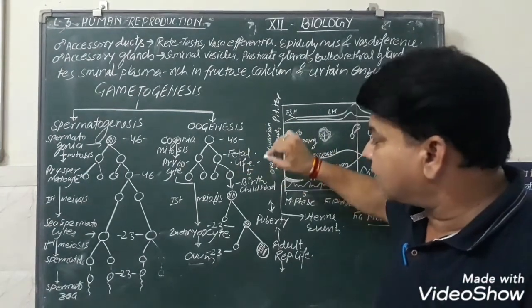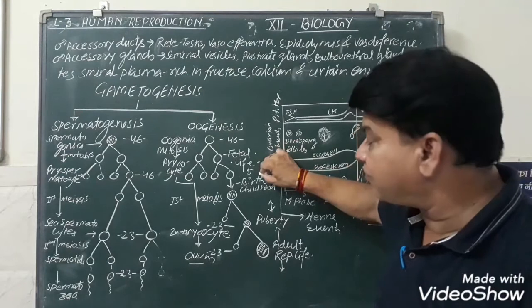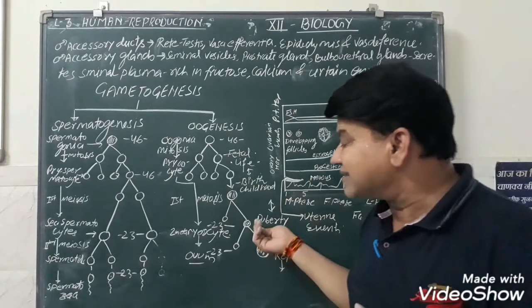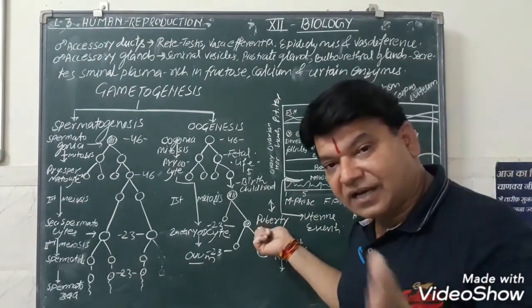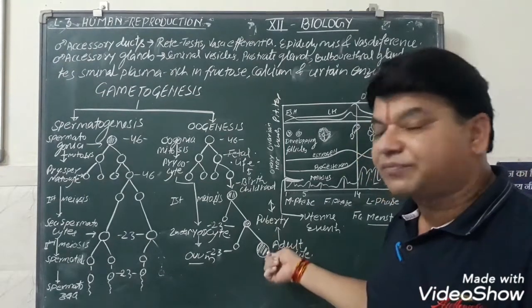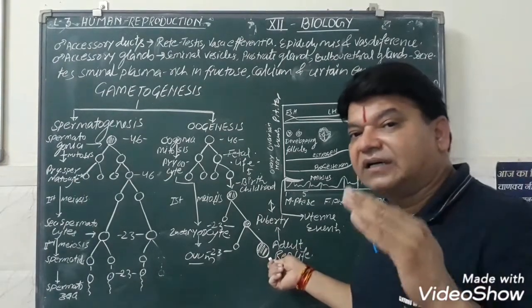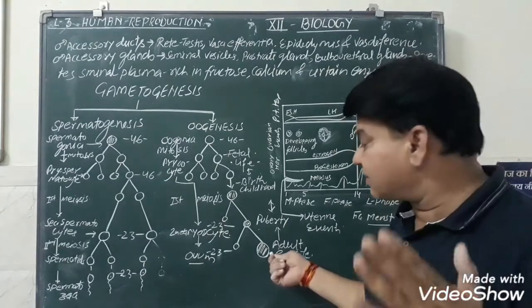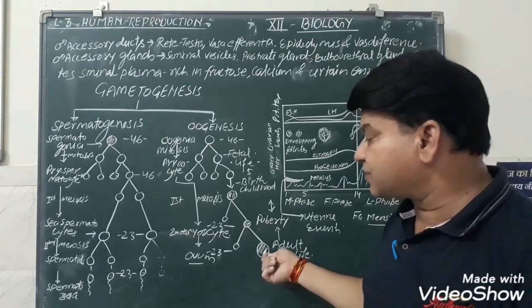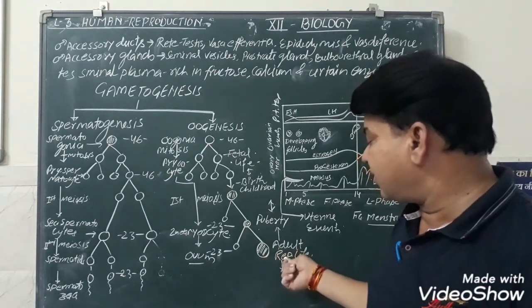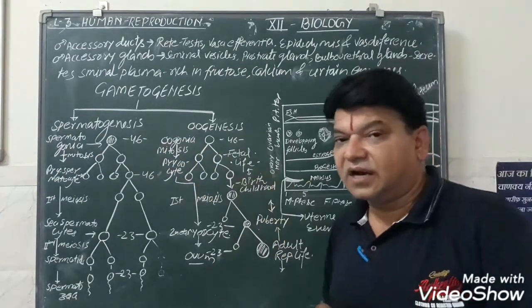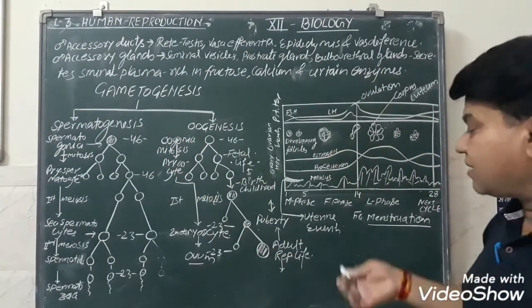To summarize oogenesis: primary oocytes are formed at childbirth, secondary oocytes are formed at the time of puberty, and in adult reproductive life the ovum is produced. After the first menstruation takes place in females, there is the ovum produced. This stage is known as adult reproductive life. This is the overview of spermatogenesis and oogenesis.